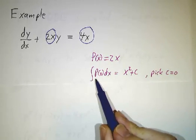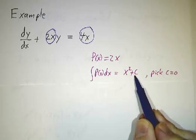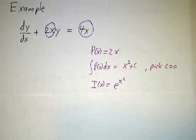And when we integrate p, we get x squared plus a constant. But we can pick our constant to be anything we want. And it's convenient to just let it be 0. So our integrating factor is going to be e to the x squared.